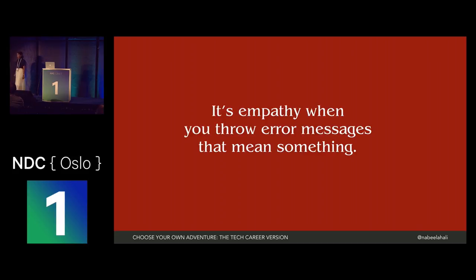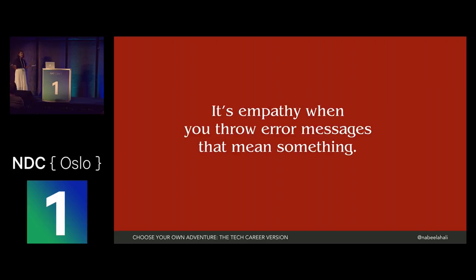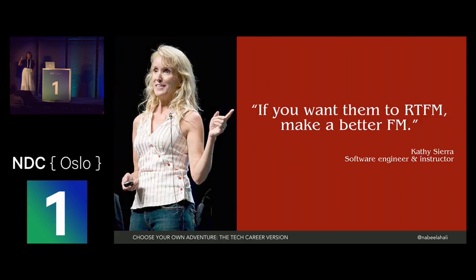Empathy involves looking at somebody, thinking about their perspective before reacting — seeking first to understand and see their perspective. In being more empathetic, we can adjust the way we interact with each other. How many times have you used an API and gotten a strange error message that made you feel like an idiot — it's really just that the error message sucked. It didn't tell you what was wrong. It's empathy when you throw error messages that mean something, when you give people options, like when Git says 'did you mean git checkout?' when you misspelled it. Kathy Sierra says: if you want them to RTFM, make a better FM.